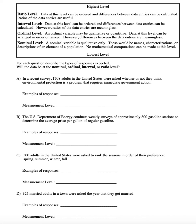We're going to look at four different levels of measurement, arranged from the lowest level to the highest. At the bottom we have the nominal level. A nominal variable will be qualitative only. It could include names, characterizations, or descriptions of an element of a population, but no mathematical calculations could be made at this level.